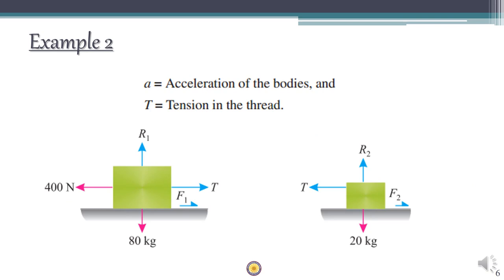First, draw the free body diagram for both bodies. Both are moving to the left. For body A (mass 80 kg), weight = 80 × 9.81 acts downward, reaction R1 acts upward. The 400 N pull acts to the left. Since motion is leftward, friction F1 acts to the right. Thread tension T also acts to the right. Acceleration is therefore toward the left.